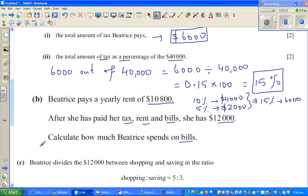What's the tax? The tax we have to add: tax plus rent. Tax is $6,000 plus rent is $10,800, so this is $16,800. What they're saying is $16,800, which is tax plus rent, plus bill, plus she is left with $12,000 equals $40,000.